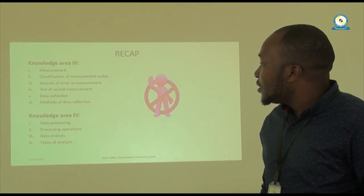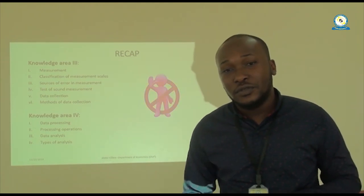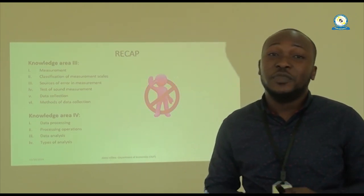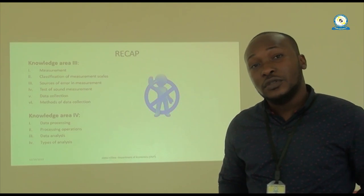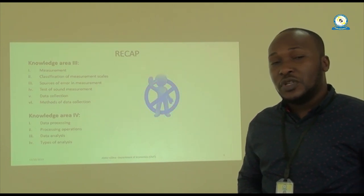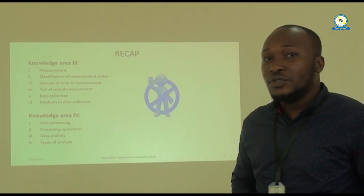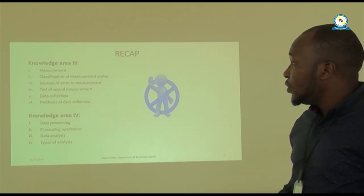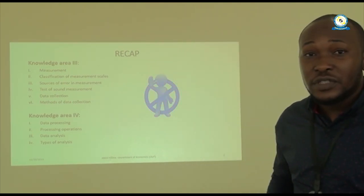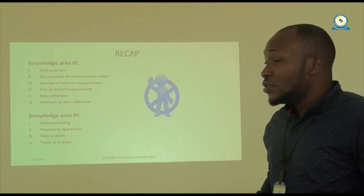Then we looked at sources of errors in measurement. There is always human error — you cannot be 100% perfect. The first source of error is the respondent: the respondent may be ignorant of what you are asking and may give you false information, leading to error. Another source is the situation — if you are in the field and there are riots, or the environment is not good, or it is raining, that can cause an error in measurement.